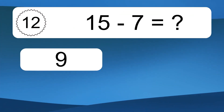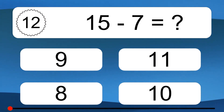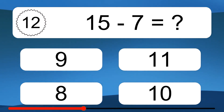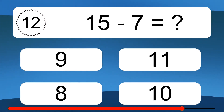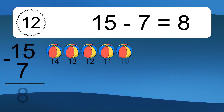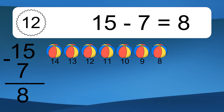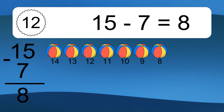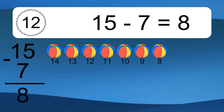15 minus 7 equals what? 15 minus 7 equals 8. Let's count it: 14, 13, 12, 11, 10, 9, 8.